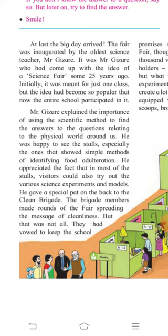He was happy to see the stalls, especially the ones that showed simple methods of identifying food adulteration. Now, what is meant by adulteration? Adulteration means making a food or drink less pure by adding another substance. That means whatever you get in the market may not be pure — there might be some impurities added. For example, in tea powder, iron filings may be mixed in, or in sesame seeds other seeds might be added, making the food adulterated or impure.